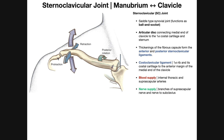Any movement of the scapula produces a corresponding movement of the SC joint. For example, shoulder abduction — doing shoulder raises with your deltoids — causes the scapula to elevate and undergo upward rotation, which also produces a movement of the SC joint. If you're doing a bench press or dumbbell flies, you're protracting the scapula during the upward phase, which also produces a movement of the SC joint. The key is you can't have a movement of the scapula without a corresponding movement of the SC joint — they work in tandem completely.